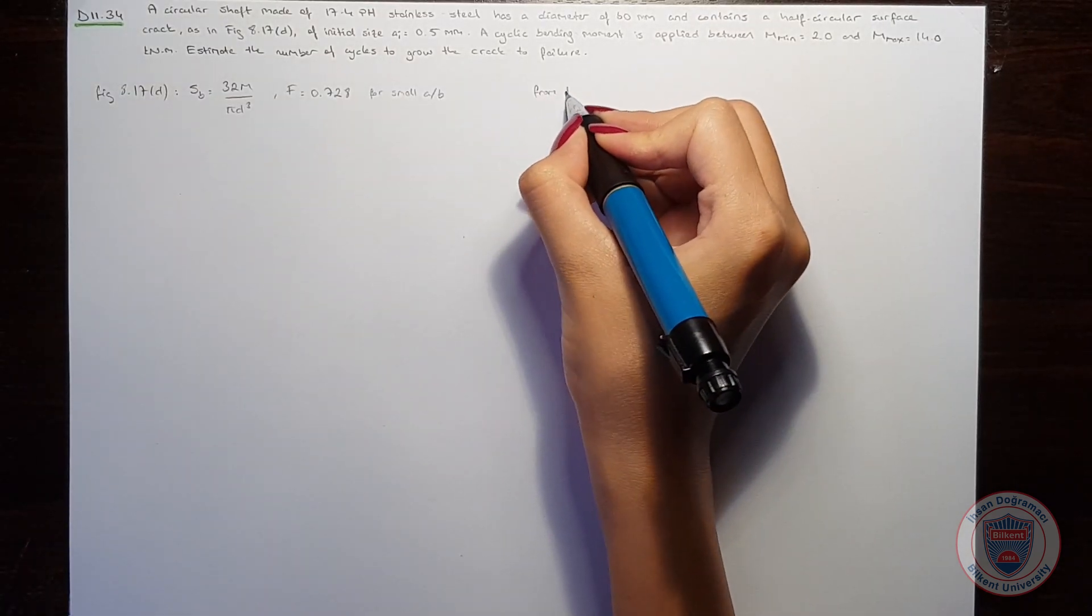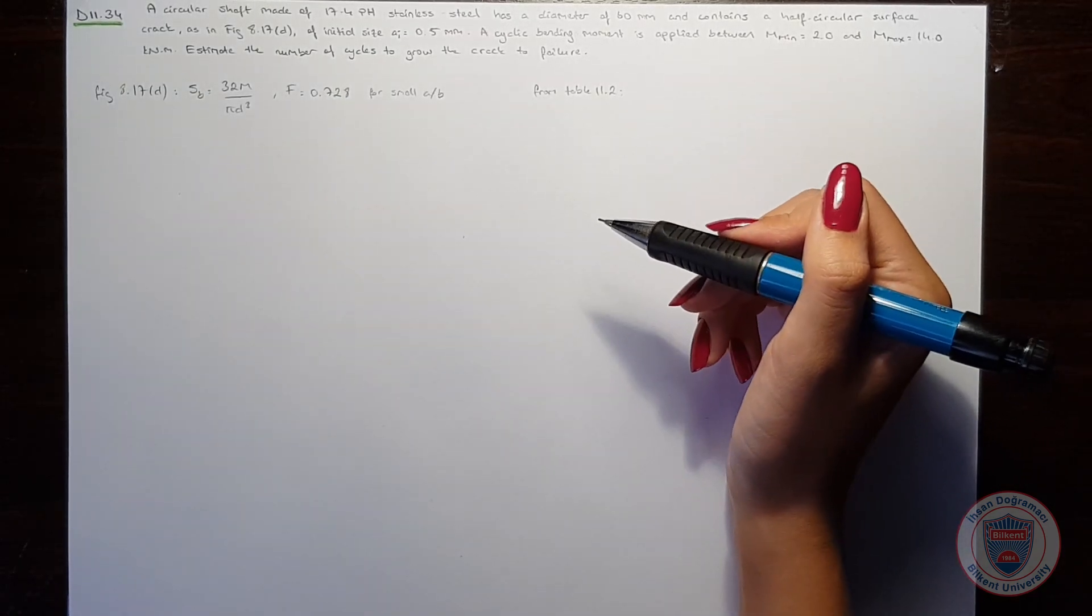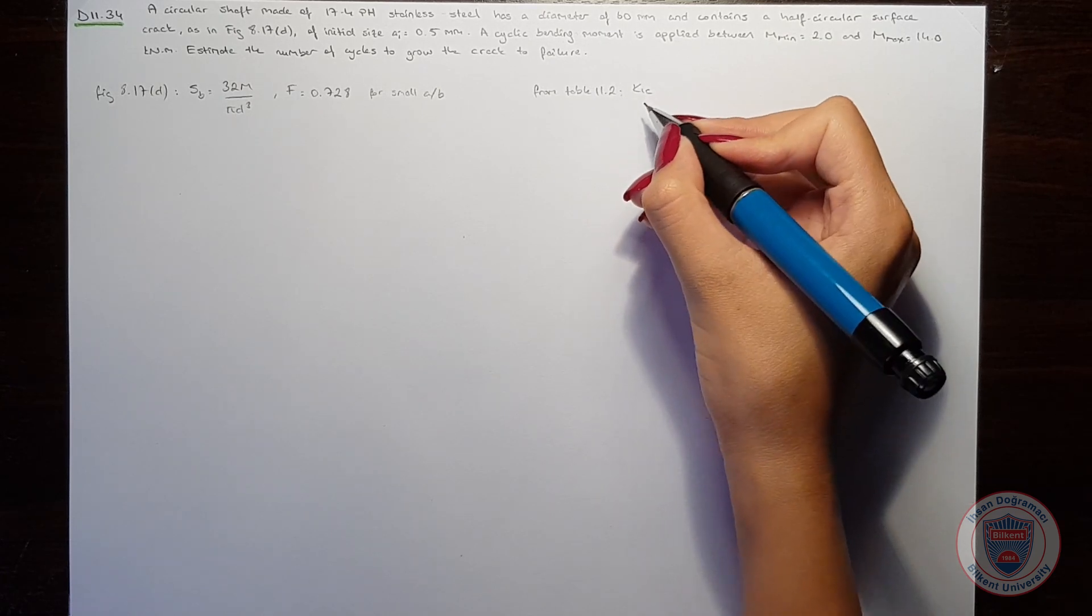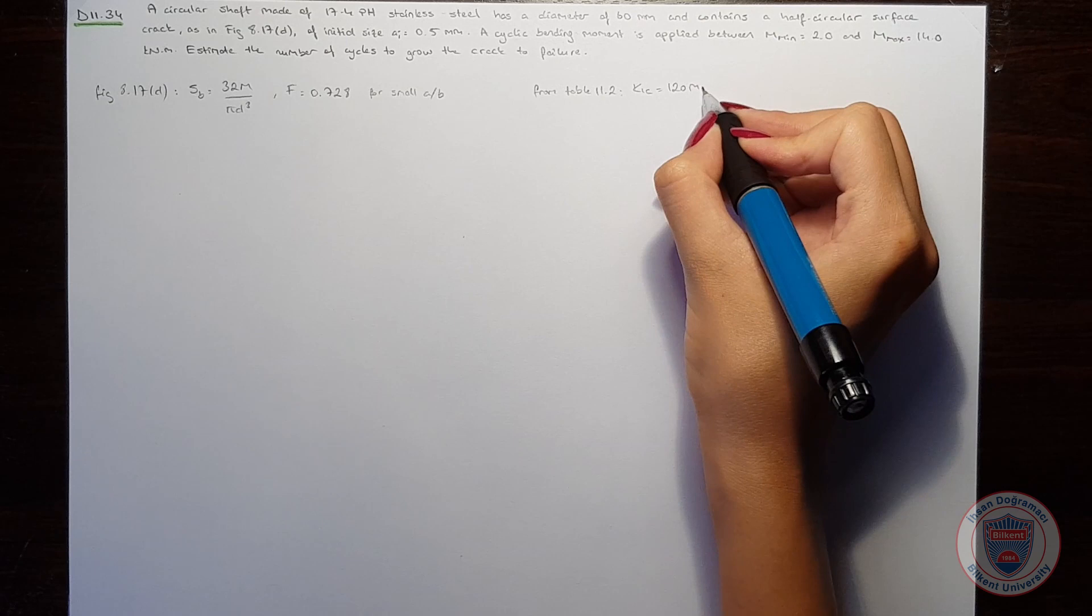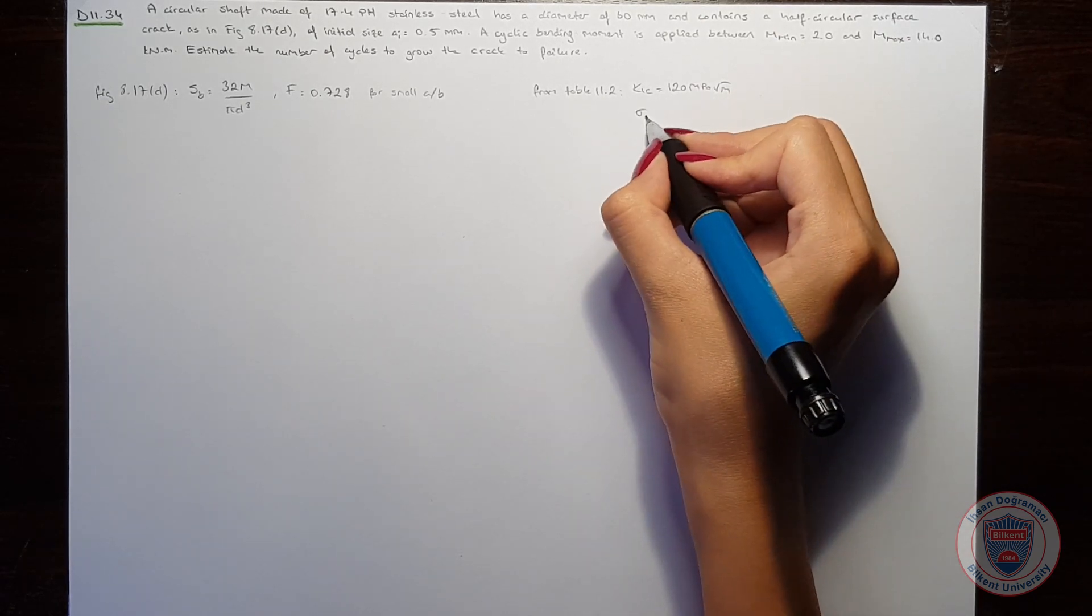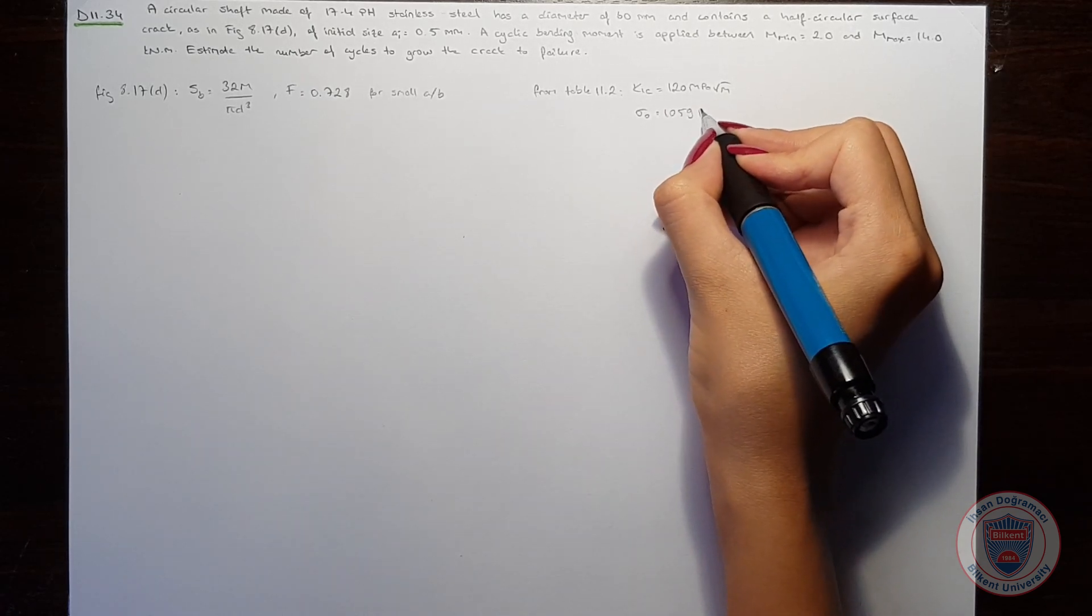Also, from table 11.2, for this type of steel, the stress intensity factor will be 120 MPa square root meters, σ₀ will be 1059 MPa.